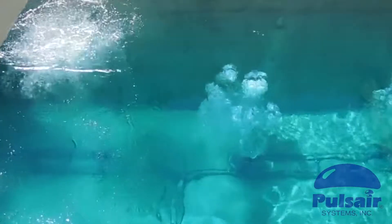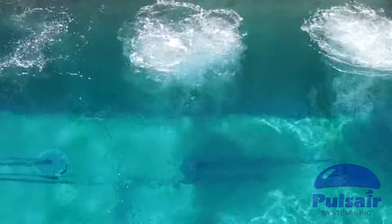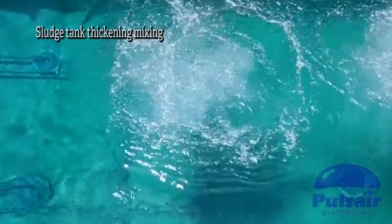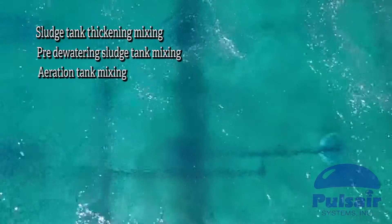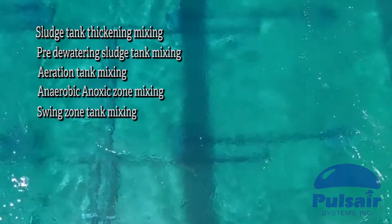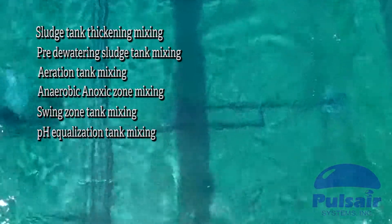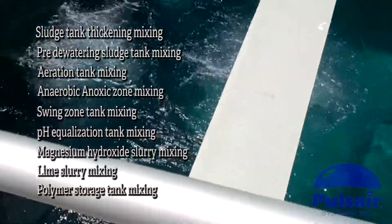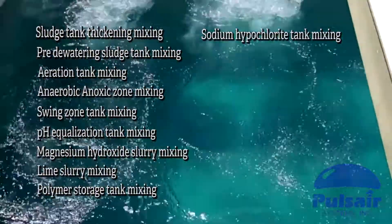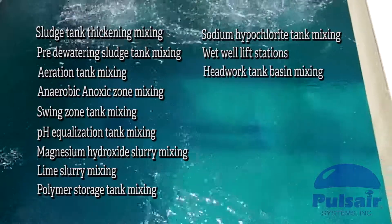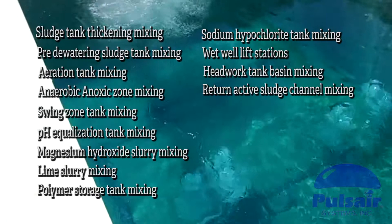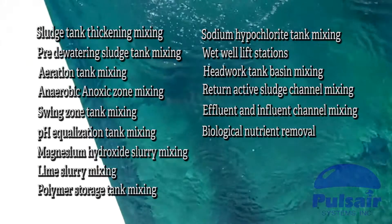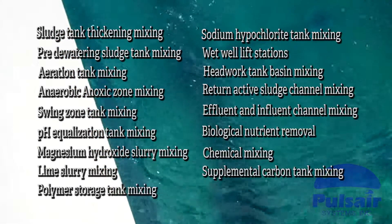Pulse Air System has wastewater mixing solutions for all types of industrial and municipal water and wastewater treatment applications, such as: sludge tank thickening mixing, pre-dewatering sludge tank mixing, aeration tank mixing, anaerobic anoxic zone mixing, swing zone tank mixing, pH equalization tank mixing, magnesium hydroxide slurry mixing, lime slurry mixing, polymer storage tank mixing, sodium hypochlorite tank mixing, wet well lift stations, headwork tank basin mixing, return active sludge channel mixing, effluent and influent channel mixing, biological nutrient removal, chemical mixing, supplemental carbon tank mixing, and more.